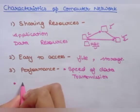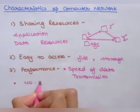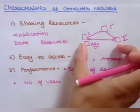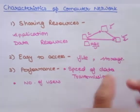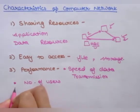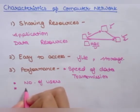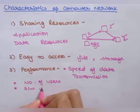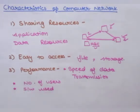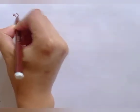The second factor under performance is the number of users — how many users or computers are connected, and how much speed the data transmission achieves. The next factor is the software used: which software we are using to share data is also very important. So all these are taken under the performance characteristic of computer network.